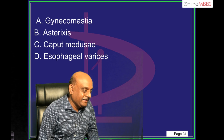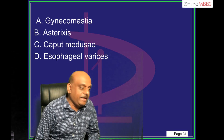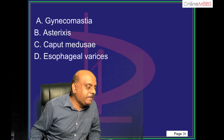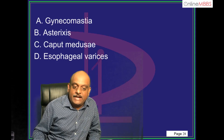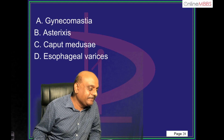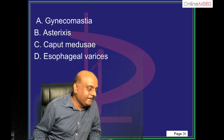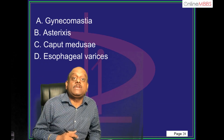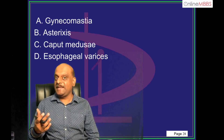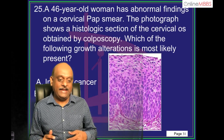What is the one responsible? Brahma Teertha Chaturvedi is proposing asterixis; Roshan Yadav is thinking caput medusae. Hyperestrogenism is responsible for the telangiectasia. The same hyperestrogenism in cirrhosis of liver is also responsible for gynecomastia. That is what you need to basically remember — very, very important.